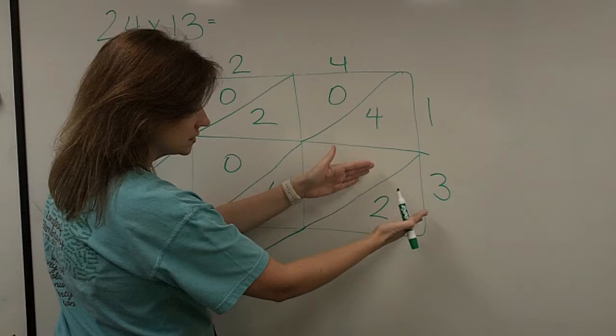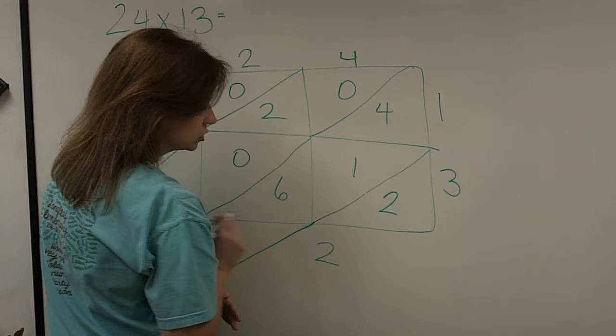Well, inside this box in this diagonal, there's only one number. It's a 2. So, it's like saying 2 plus nothing. So, down here, we're going to write 2.